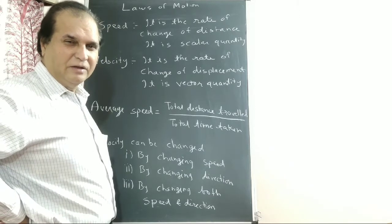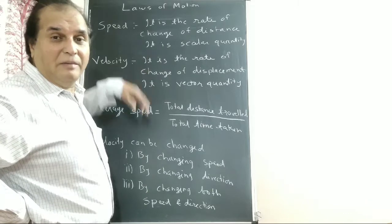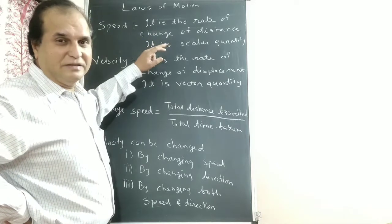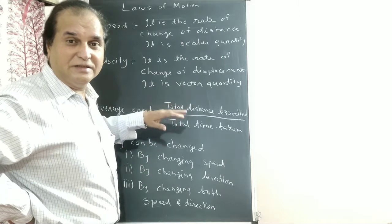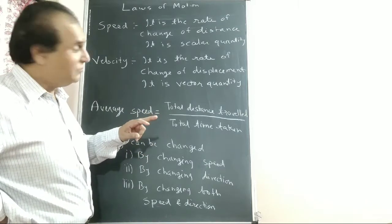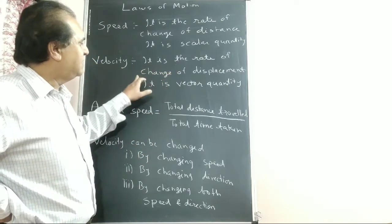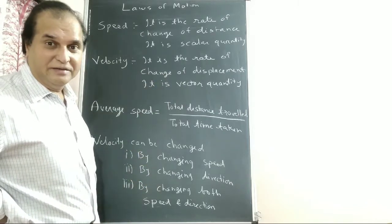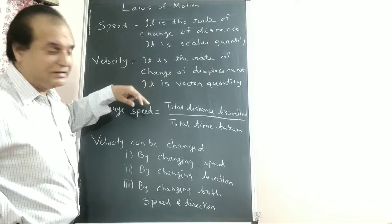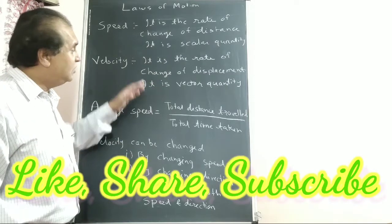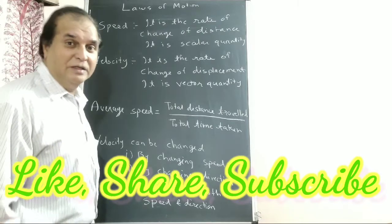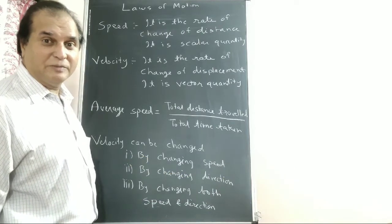Displacement may be less than or equal to distance. Now, the difference between speed and velocity: speed is the rate of change of distance — distance travelled in unit time — and it is a scalar quantity. Velocity is the rate of change of displacement, and it is a vector quantity. Velocity relates to displacement; speed relates to distance. We should know these points to distinguish between them when the question comes: distinguish between speed, velocity, distance, and displacement.